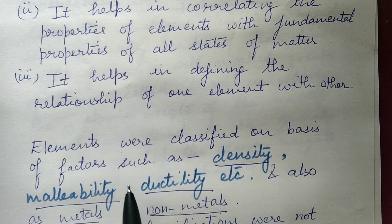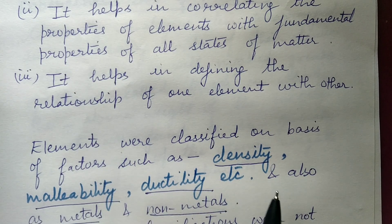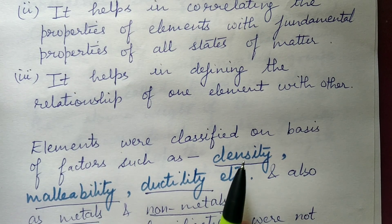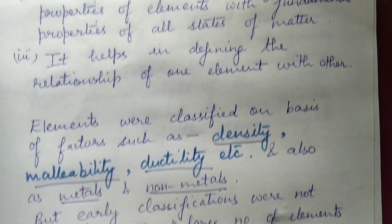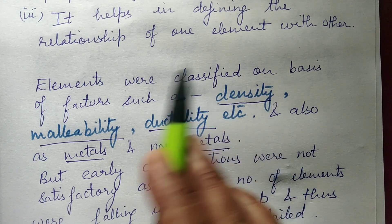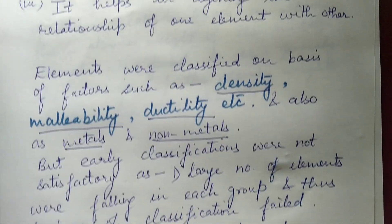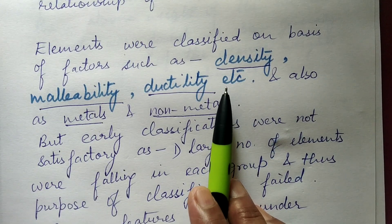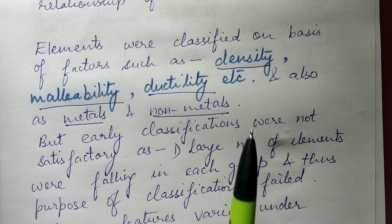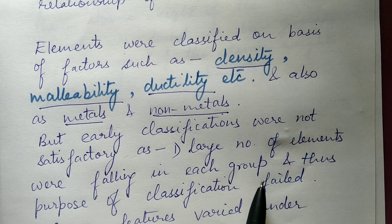Earlier, scientists were classifying elements on the basis of factors like density, malleability, ductility, metallic nature, and non-metallic nature. But the classification on the basis of these factors was not very fruitful. When classification was done on the basis of these factors, a large number of elements were falling in each group, and thus the purpose of classification failed.